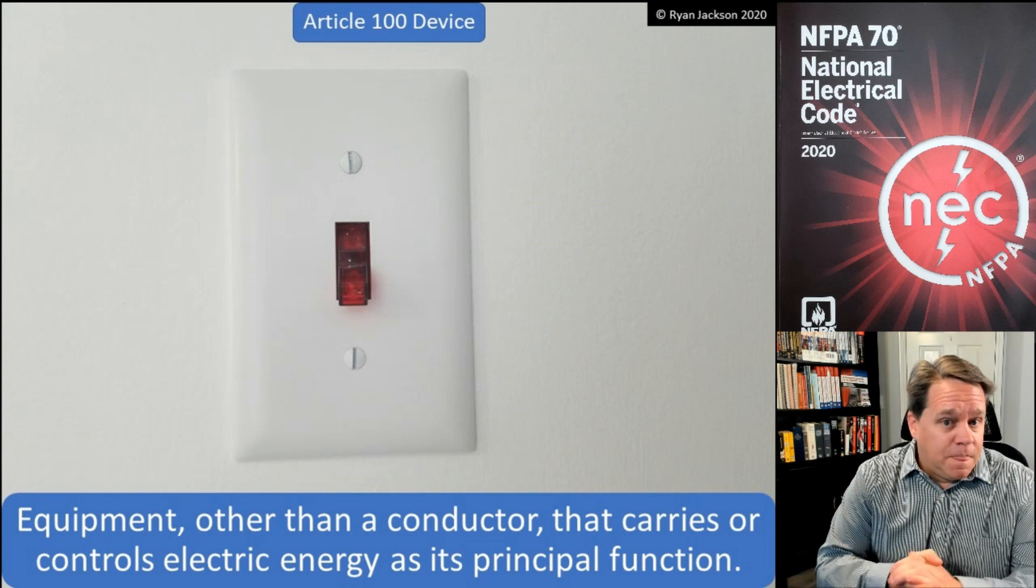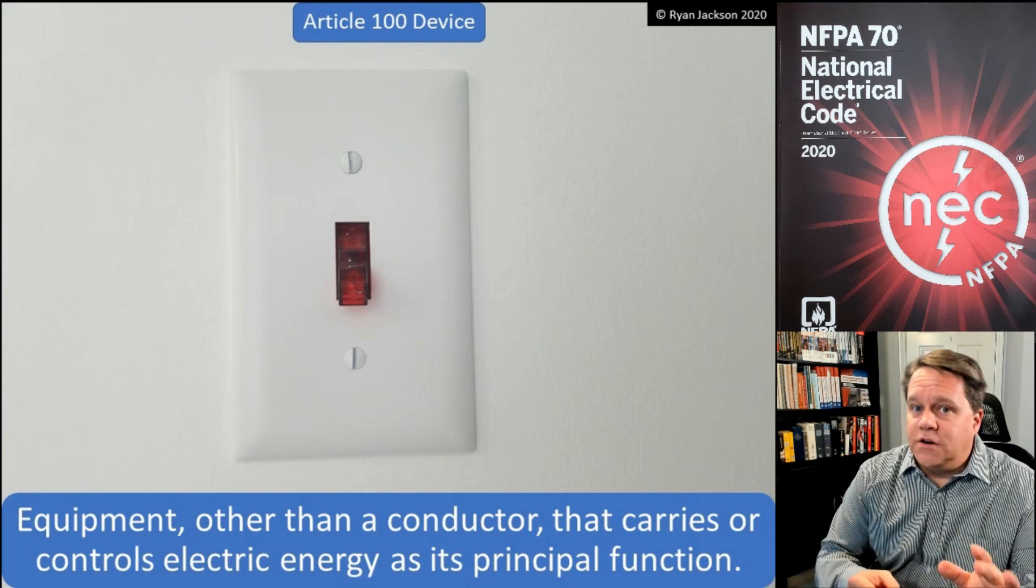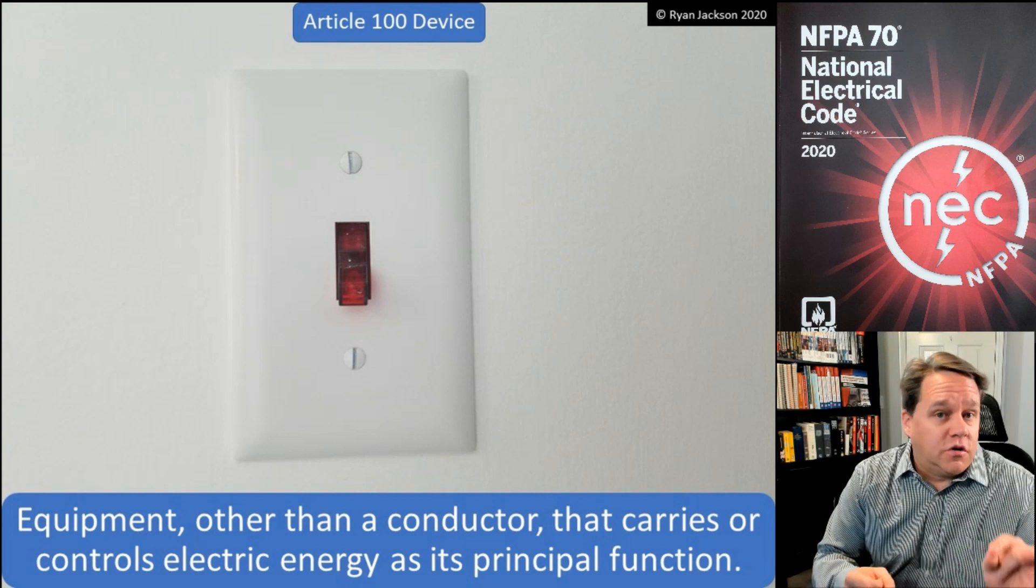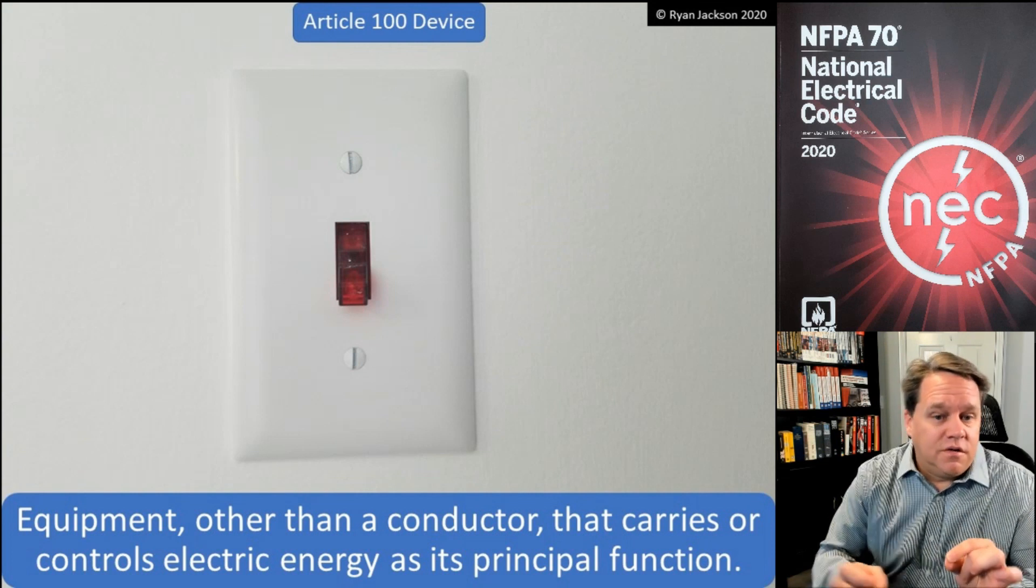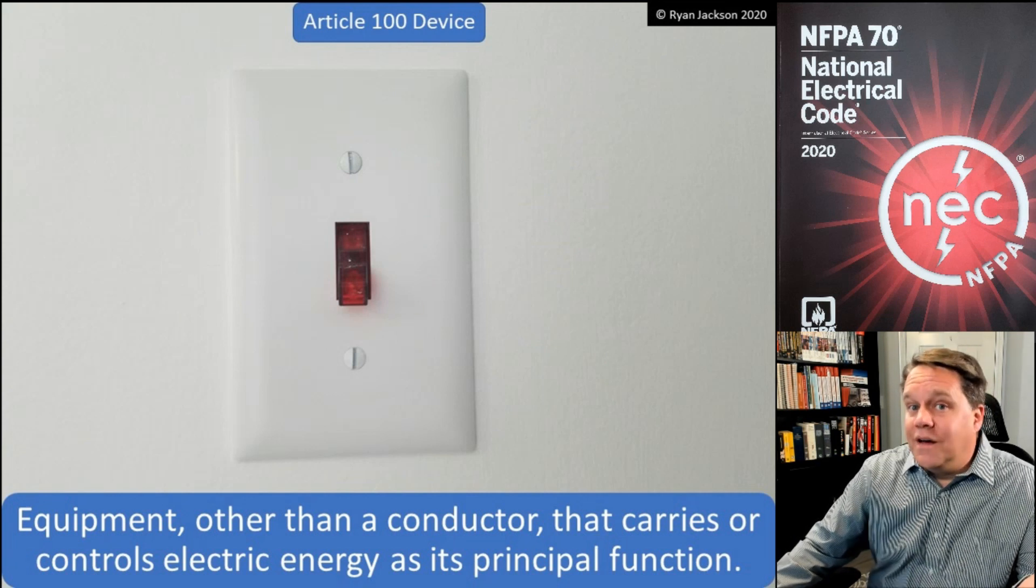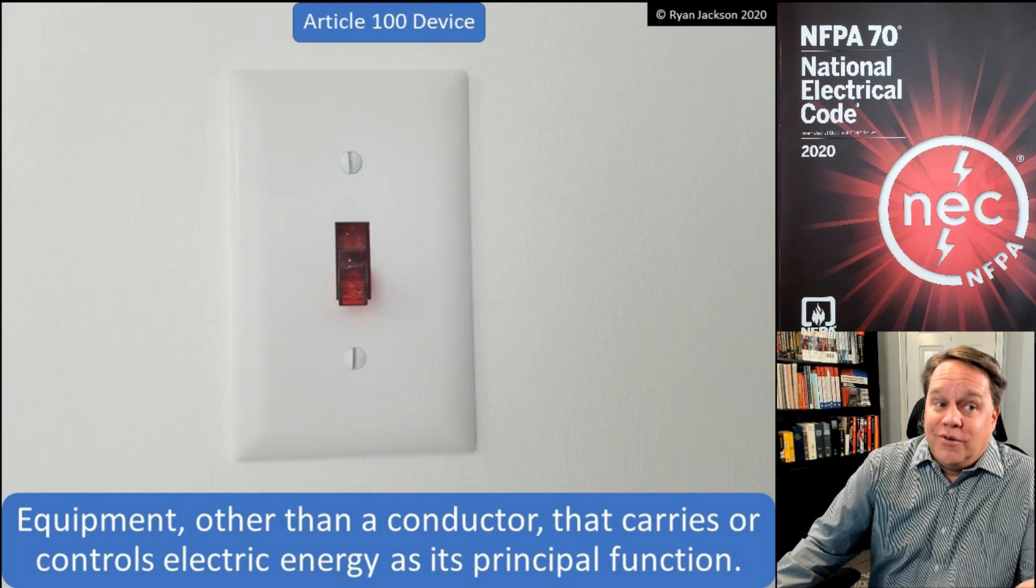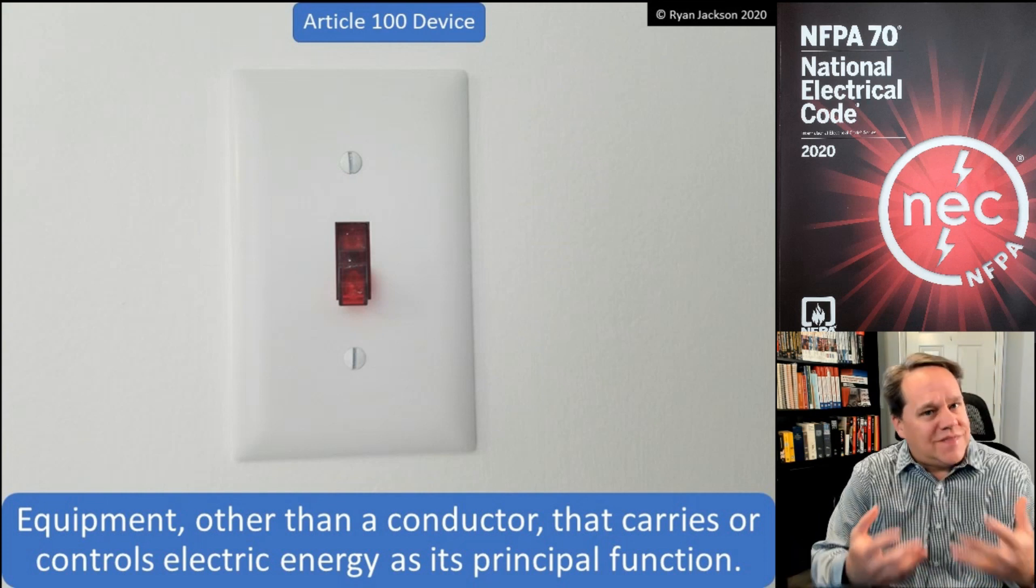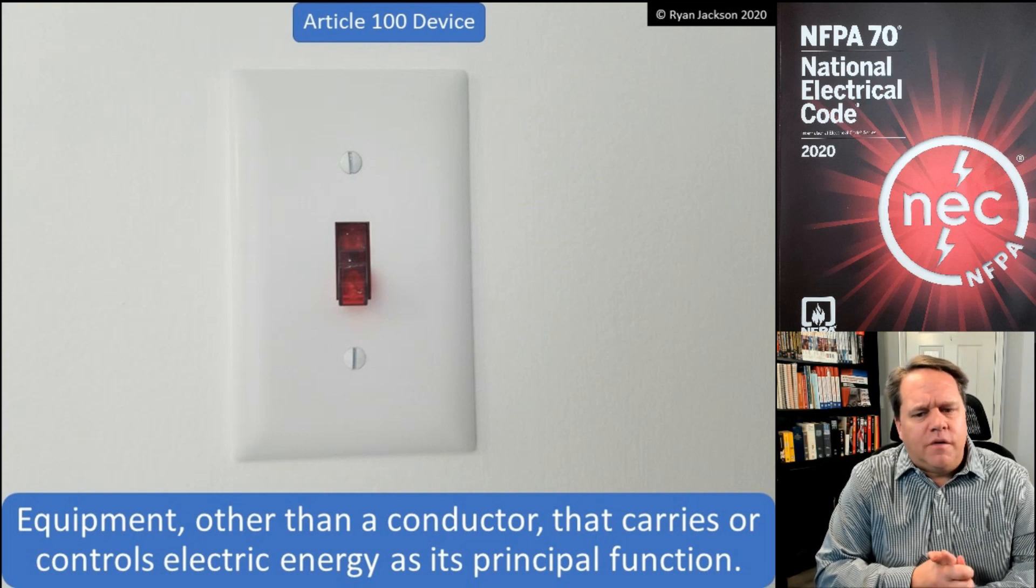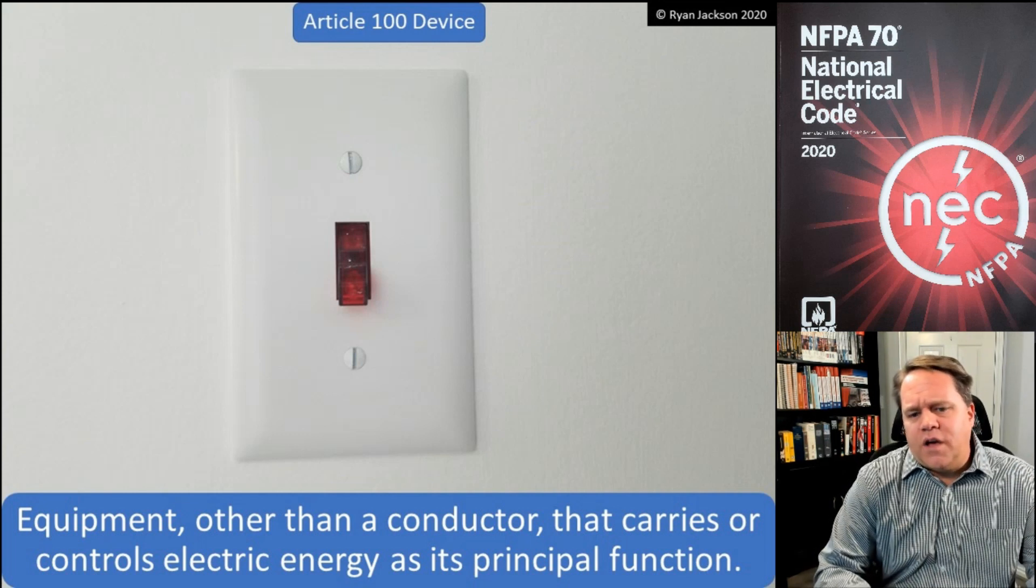We have an illuminated switch. Now again, the old definition said it controls or carries or controls energy but does not utilize it. Well this does utilize electric energy, maybe like one watt, but it is utilizing energy. So with that said, they changed the definition several code cycles back to clarify that it carries or controls energy as its principal function.